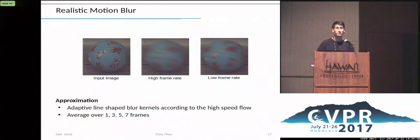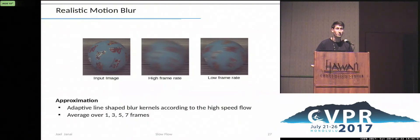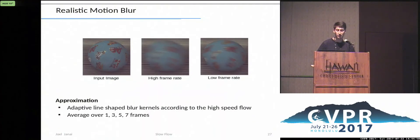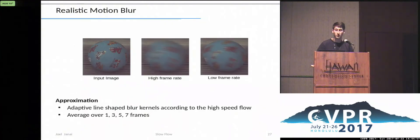An interesting property of real videos is motion blur. Unfortunately, it does not occur in our high-speed videos because of the short shutter time. For the evaluation and training of optical flow methods, we approximate the motion blur by applying line-shaped blur kernels according to our high-speed flow estimates to our frames, and taking the average over different numbers of frames. Compared to using the same technique on the low frame rate, this gives us a very realistic motion blur, as can be seen in this figure.